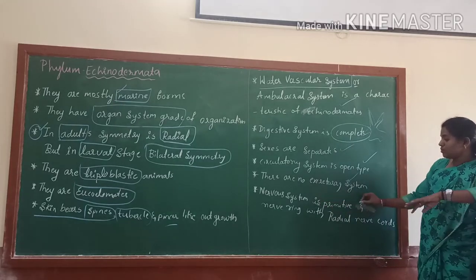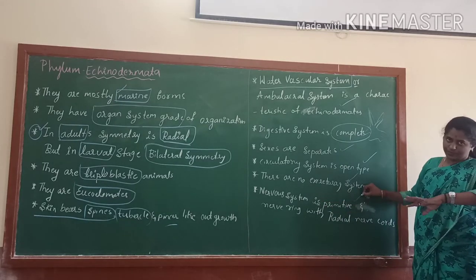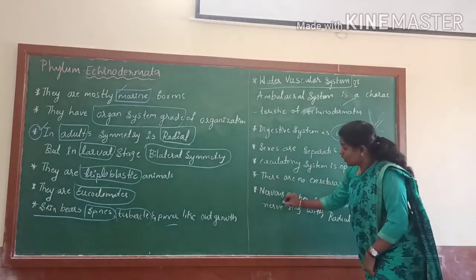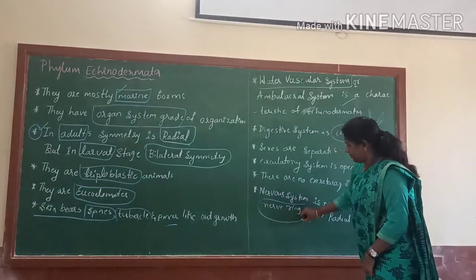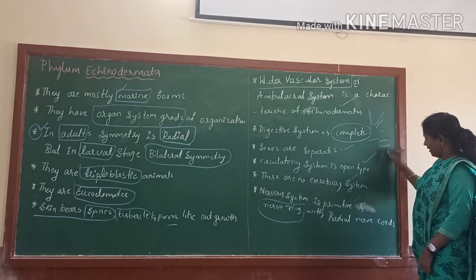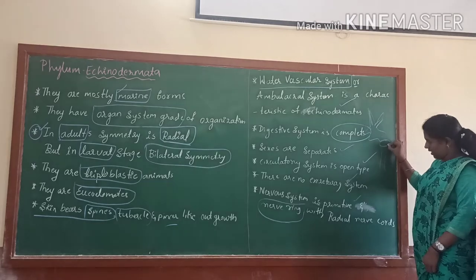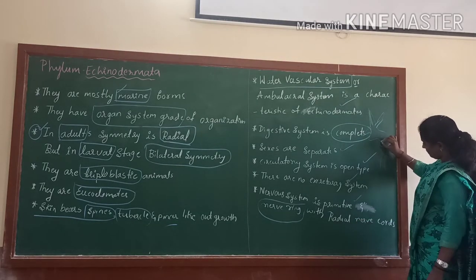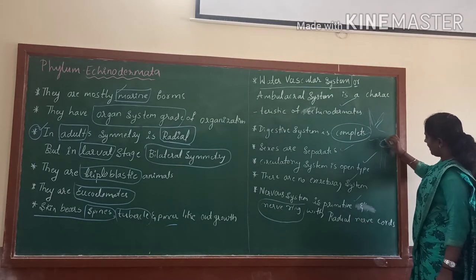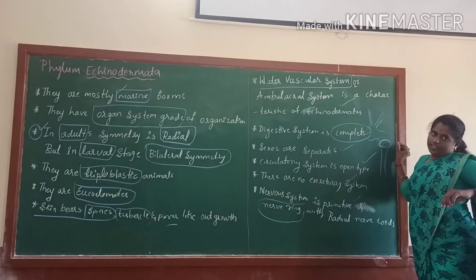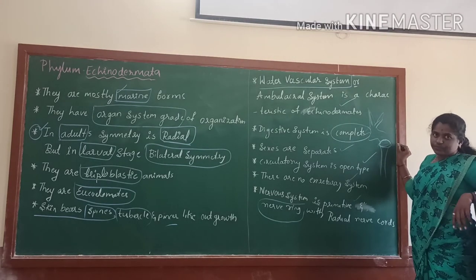The nervous system is primitive. They consist of a nerve ring — it is called the radial nerve cord — and the radial nerve cord is present in them.